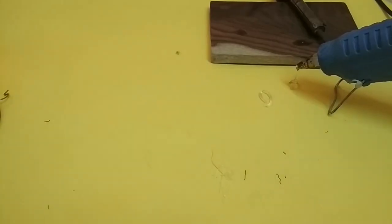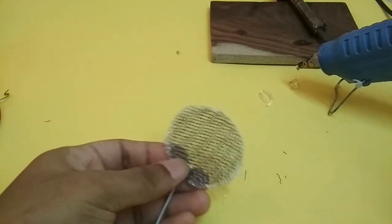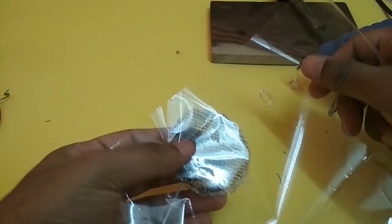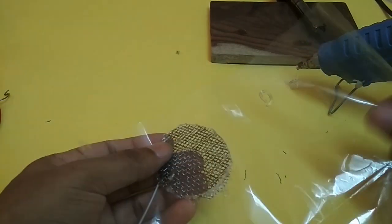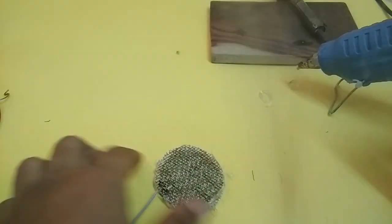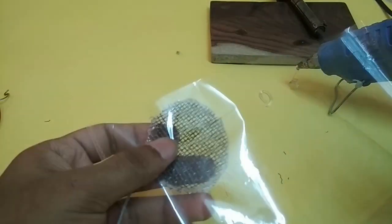So I need something to separate this from the foil, and so I'm going to use this really thin plastic film. Well, it could be thinner actually, but it'll probably work.